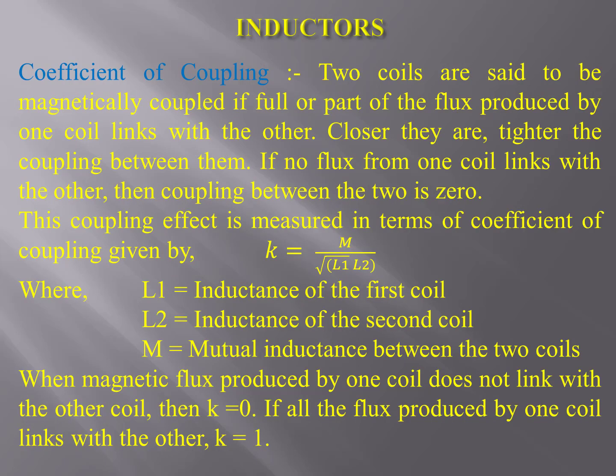Coefficient of Coupling: Two coils are said to be magnetically coupled if full or part of the flux produced by one coil links with the other. If they are closer to each other, the coupling between them is tighter. If no flux from one coil links with the other, then coupling between the two coils is zero. This coupling effect is measured in terms of coefficient of coupling, denoted by K. The equation of coefficient of coupling is shown on the screen, where L1 is inductance of the first coil, L2 is inductance of the second coil, and M is mutual inductance between the two coils. When magnetic flux produced by one coil does not link with the other, the coefficient of coupling is zero. If all the flux produced by one coil links with the other, the coefficient of coupling is one.